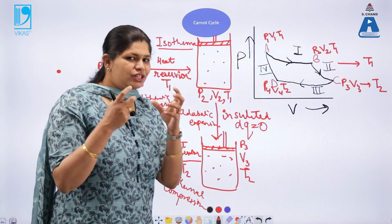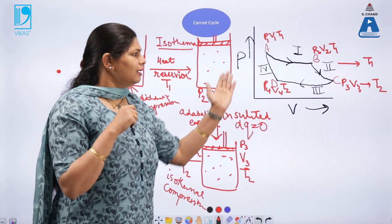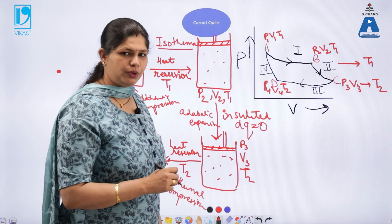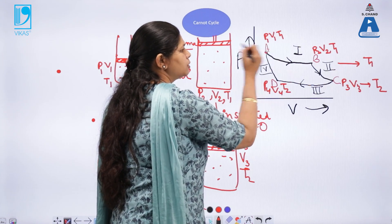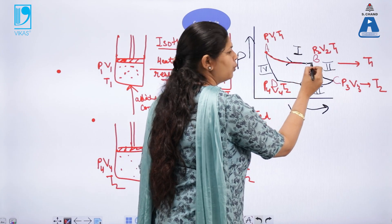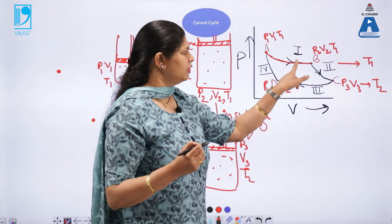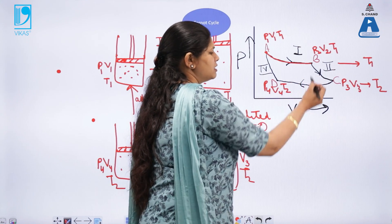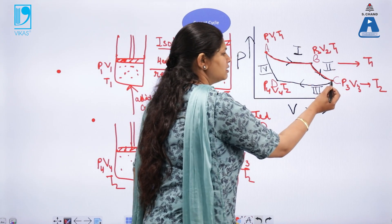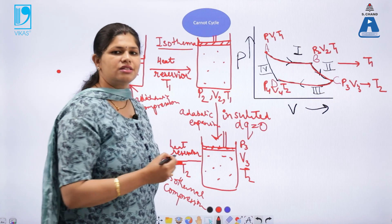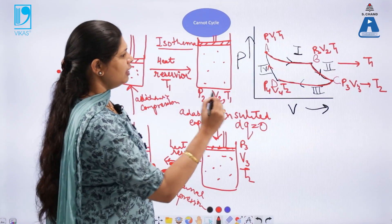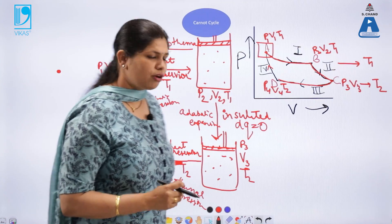The efficiency of this engine can be understood by drawing a PV graph. Starting at point A, the system undergoes isothermal expansion at temperature T1 to point B. The second part is adiabatic expansion, where volume increases to V3, reaching point C. Then the sink takes up energy and the system compresses isothermally — that is isothermal compression to point D. The fourth part is adiabatic compression, returning to state A. This is the cyclic process of the Carnot cycle.